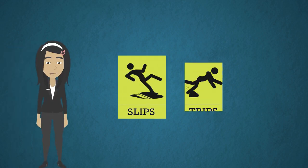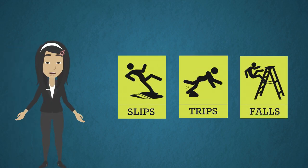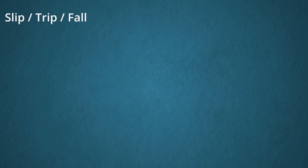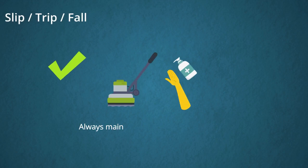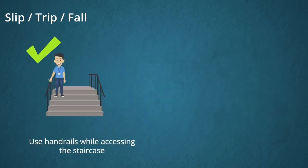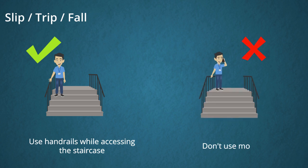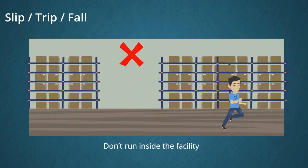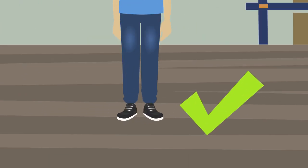Slips, trips, and falls are a leading cause of injuries at the workplace. To avoid them: always maintain good housekeeping practices, avoid dumping materials in pathways, use handrails while accessing the staircase, don't use a mobile phone, don't run inside the facility, and wear proper footwear.